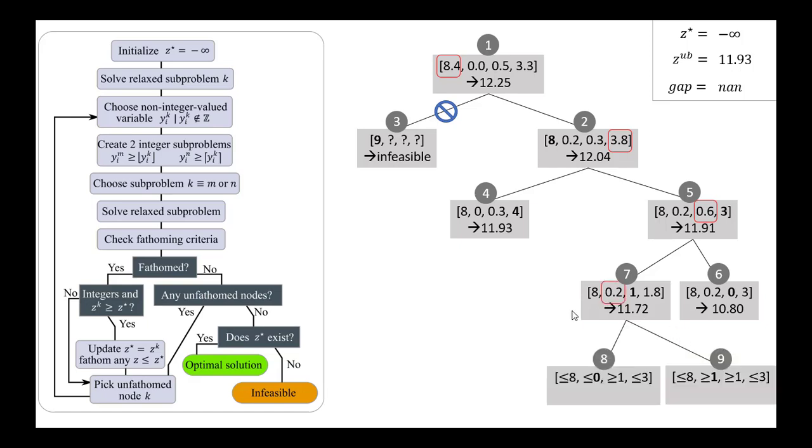Let's first move forward with node 7, again, repeating the process. Let's pick x2, introducing our constraints, solving the problem, and we get a result that this combination here for node 8 gives us 11.61, and for node 9 we get a solution of 10.46.